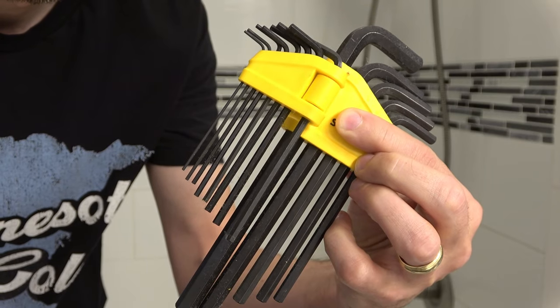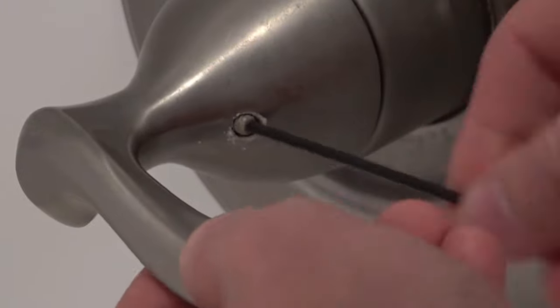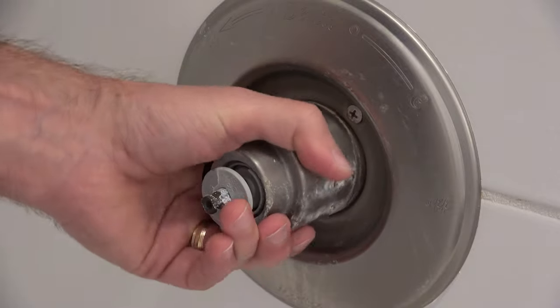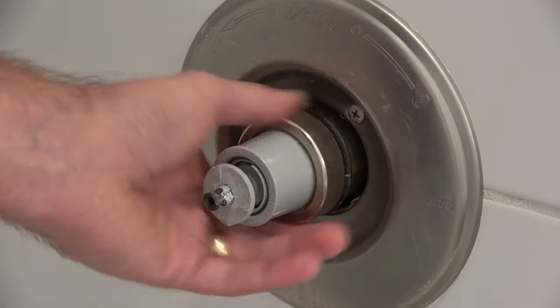Now find the right size allen wrench to take off the handle. Remove the outer casing by pulling it out, then unscrew the metal ring around it.